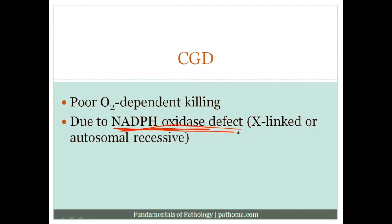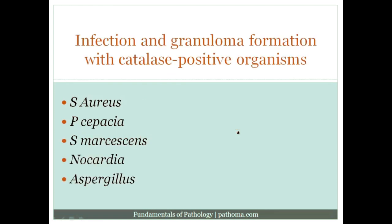Because there's an NADPH oxidase defect, patients are going to have problems generating bleach, and therefore they're going to get infections. They form granulomas with those infections, and the key type of infection they're going to get is with organisms that are catalase-positive. There's a list of five organisms that are high yield, but let's first discuss the catalase-positive concept.